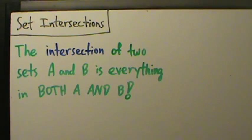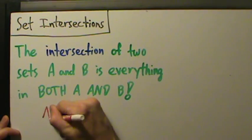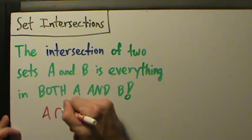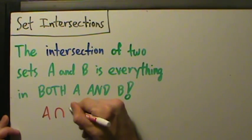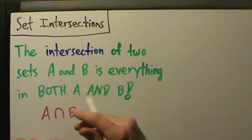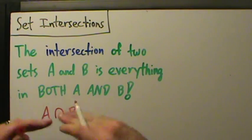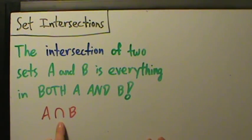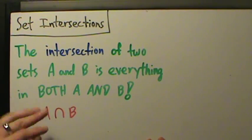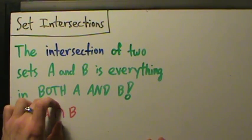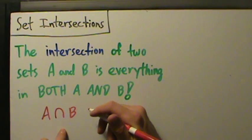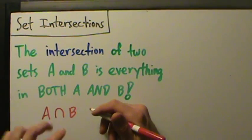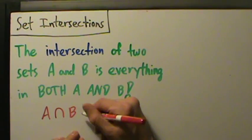So how do we denote intersection? It's written as A intersect B. It's really the same as the union symbol but flipped upside down. Remember, it's not the letter U — it's just its own symbol. So that union symbol turned upside down is what we get here. The union symbol is not the letter U; it's just that turned upside down.